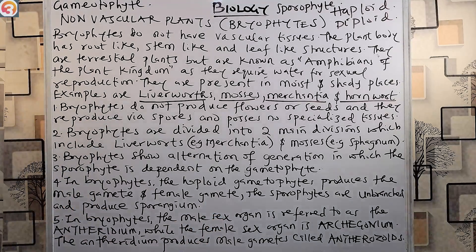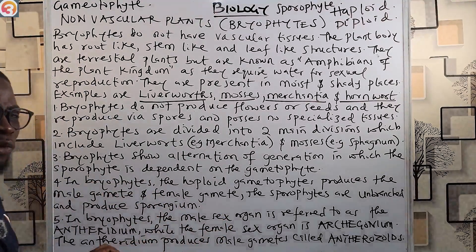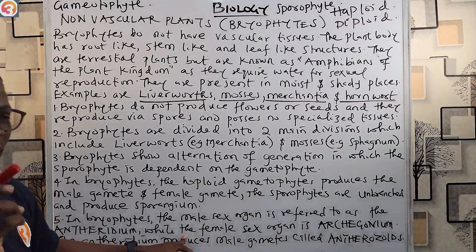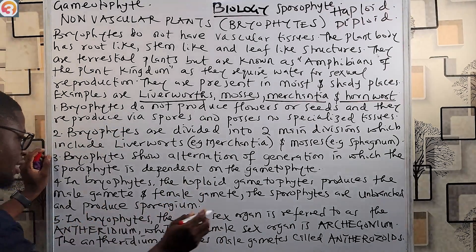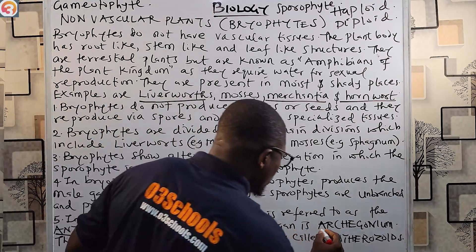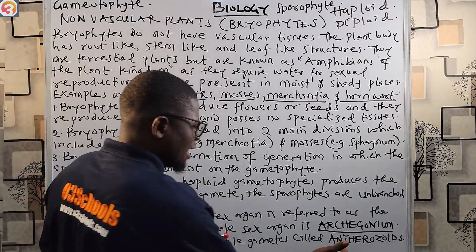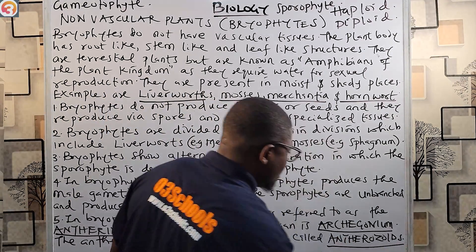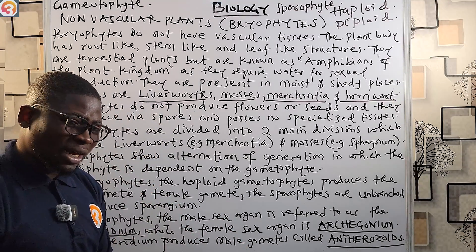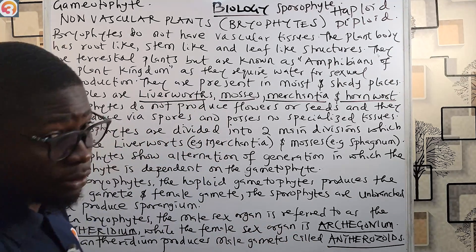In bryophytes, the male sex organ is referred to as the antheridium, while the female sex organ is referred to as the archegonium. The antheridium produces what we call the anterozoites. Please take note of these terms: male sex organ — antheridium; female sex organ — archegonium; and the antheridium produces anterozoites.